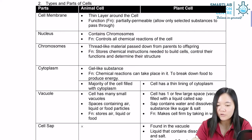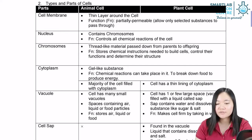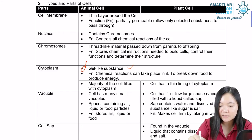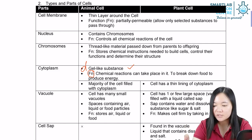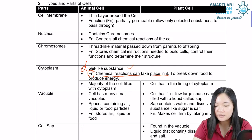Let's move on to cytoplasm. Animal cells have cytoplasm. The cytoplasm is a gel-like substance — but as I said, that is the description. Let's memorize the function instead. The function of cytoplasm is to allow chemical reactions to take place. The majority of the cell is filled with cytoplasm.